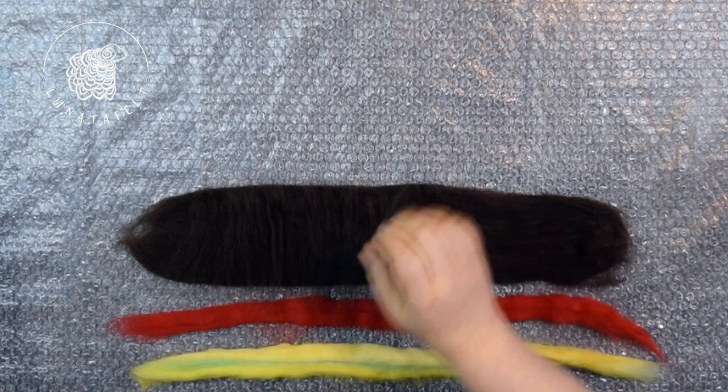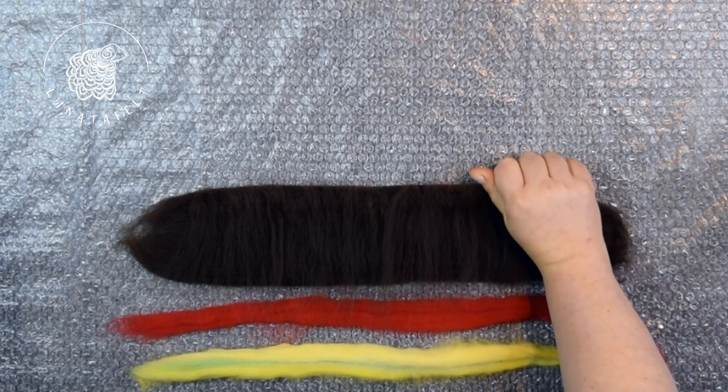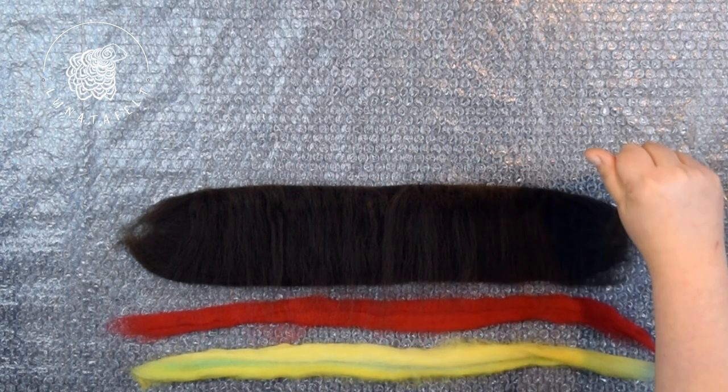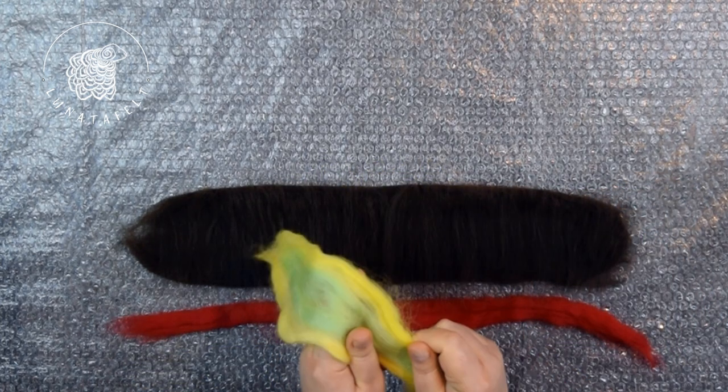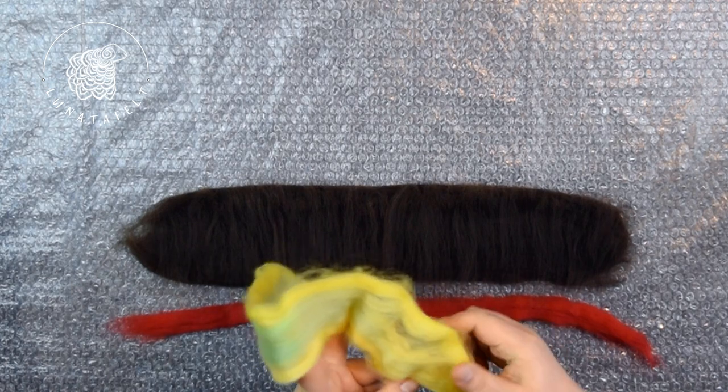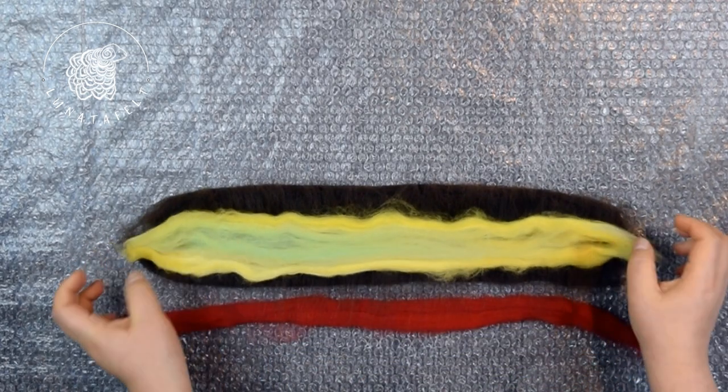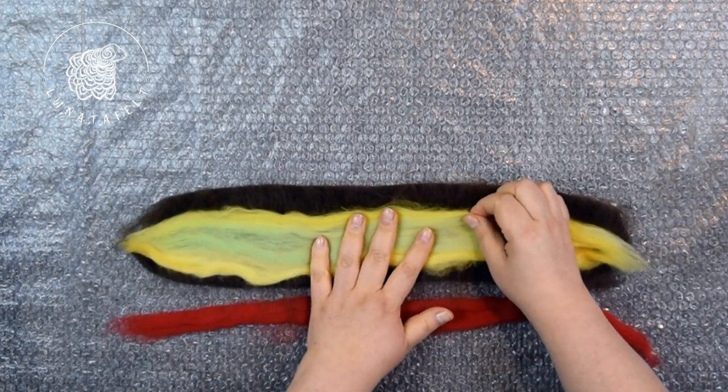This ensures the outer layer is denser and prevents fibers of other colors from showing through. Next, take the wool of the second color, in my case yellow, using one third less than the outer layer wool. Stretch it width-wise and lay it in the middle of the outer color wool.